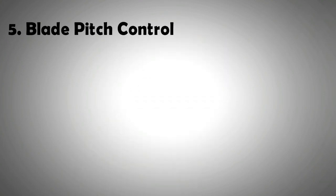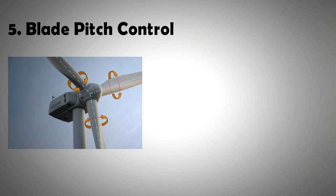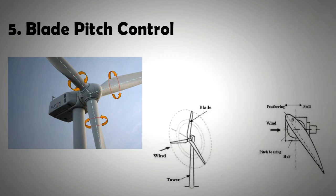Reason number five is the blade pitch control. Large-scale wind turbines can vary their blade pitch. The altering of the blade angle can be used to maximize the lift force on the blades at different wind speeds.